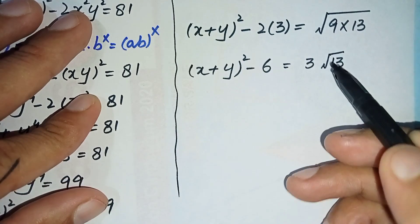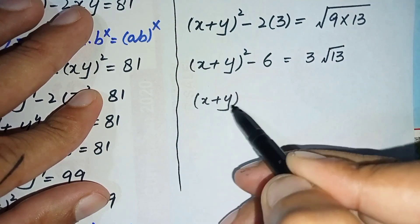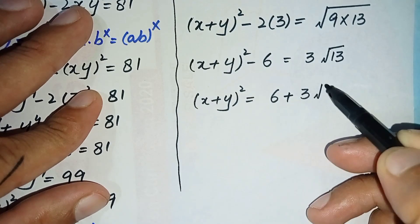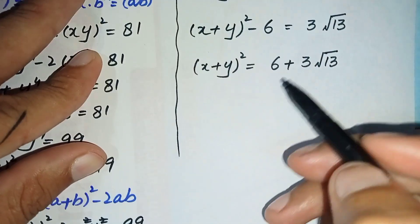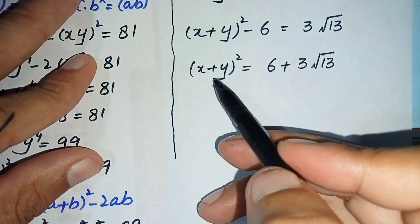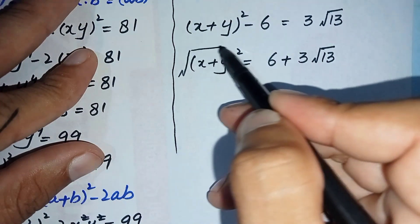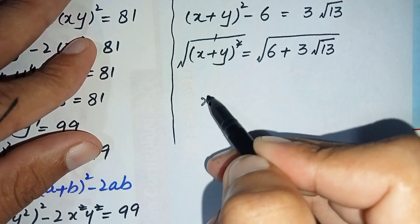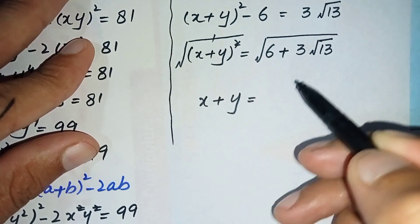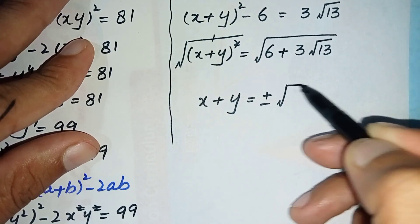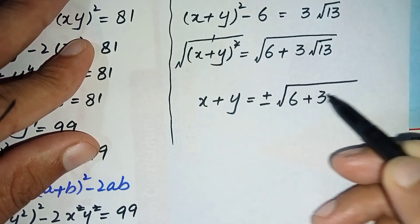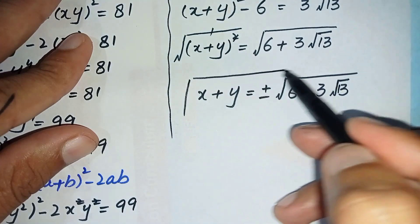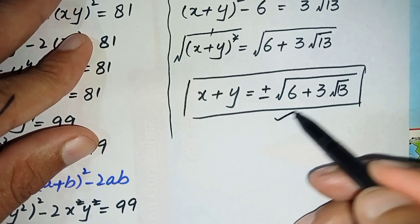Shifting the constant to the right hand side, (x plus y) whole square equals 6 plus 3 times square root of 13. Now again we will take square root on both sides to find the value of x plus y. The square and square root cancel on the left hand side, so only x plus y is left, equal to plus or minus square root of (6 plus 3 times square root of 13). This is the required answer and this is our solution.